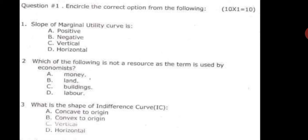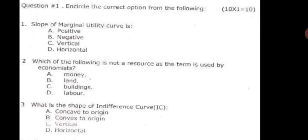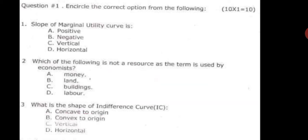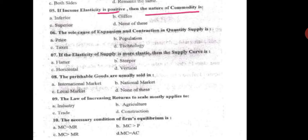The next question is: what is the shape of an indifference curve — concave to origin, convex to origin, vertical, or horizontal? The shape of an indifference curve is always convex to the origin. The correct option is B — convex.